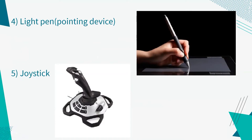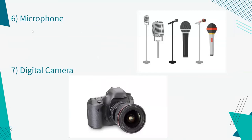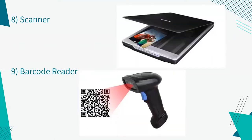The fifth input device is a joystick, which is used when we play video games. You can also see microphones, which are used to get an audio input to the computer. And there is a digital camera, and also a scanner, which is used to get a soft copy of a hard copy. And then there is a barcode reader, which you can see in supermarkets and grocery stores.